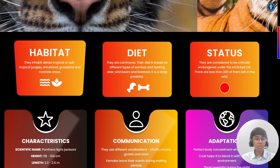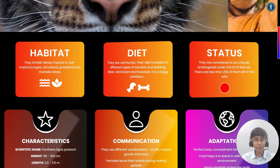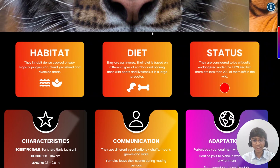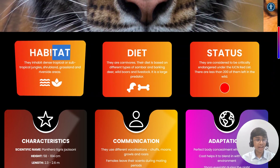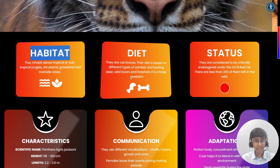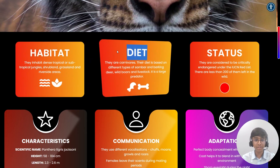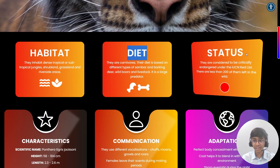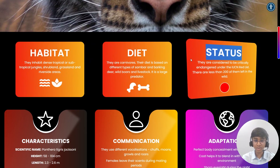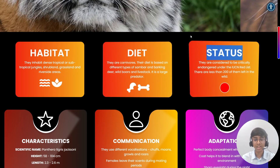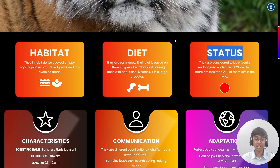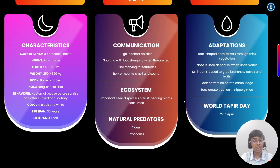The first row consists of a few simple tilt cards. They highlight the habitat of the animal, their diet and their IUCN status with a few descriptive icons.